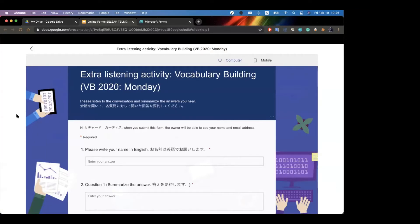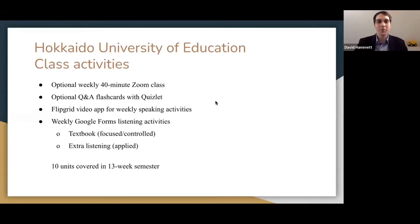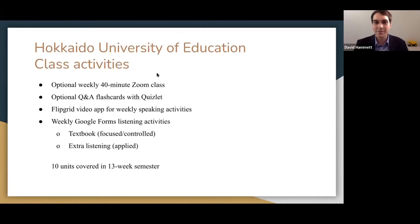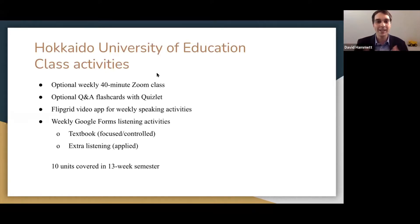I'm teaching at Hokkaido University of Education last year, and also this year I'll be teaching there again. Just like Rich, we had optional Zoom classes, and just like Rich's situation, the attendance was very good at the beginning. Then one student figured out they didn't have to come, and they just dissipated over time. I still had a few that would come religiously every week, but most of them just needed to do the assignments to complete the course, so that's what they did.